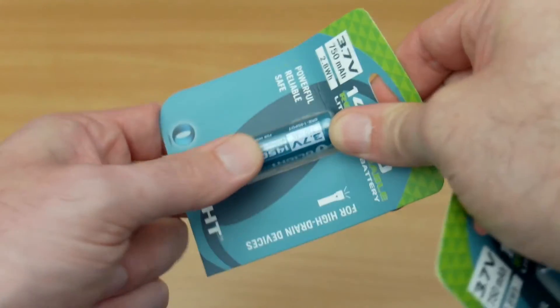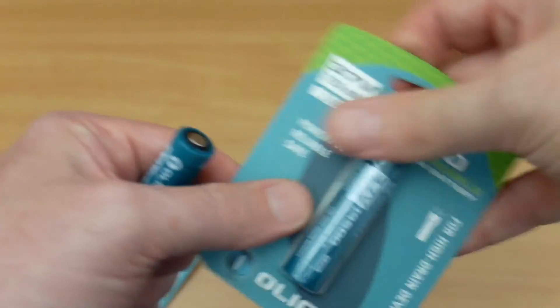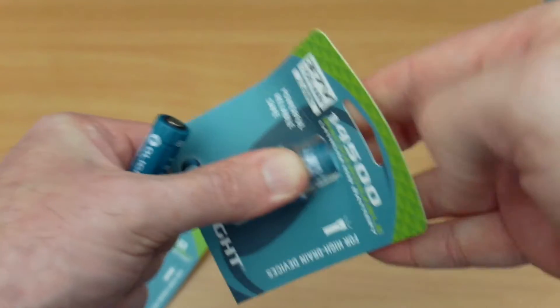Taking these out of the pack, you just simply push them through. There's no need to tear apart the packaging. Some of the cells I've looked at can be a bit fiddly to remove, not so here.